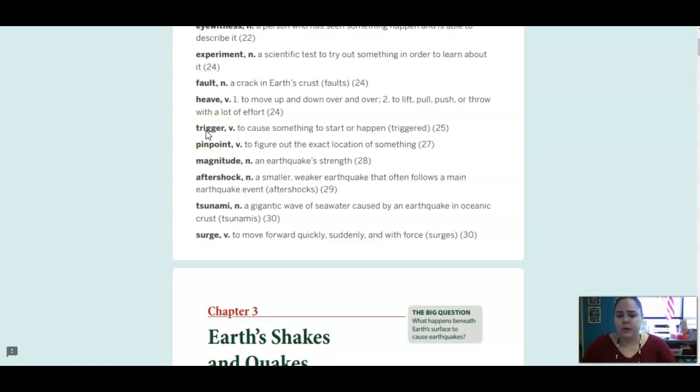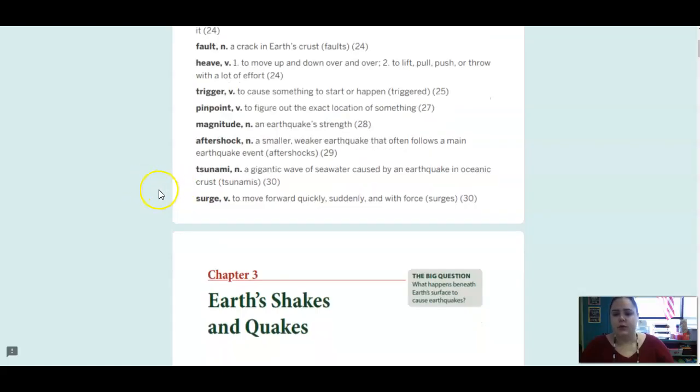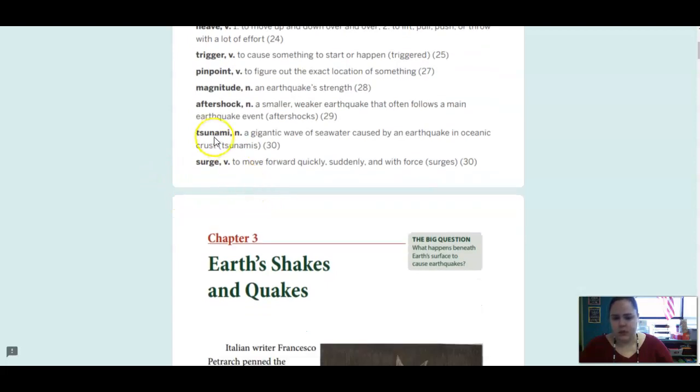Trigger is a verb, and that means to cause something to start or happen. Pinpoint is a verb, and that is to figure out the exact location. Magnitude is a noun, and that is an earthquake's strength. An aftershock is a noun, a smaller, weaker earthquake that often follows a main earthquake event. A tsunami is a gigantic wave of seawater caused by an earthquake in the oceanic crust. And then surge is a verb, and that means to move forward quickly, suddenly, and with force.